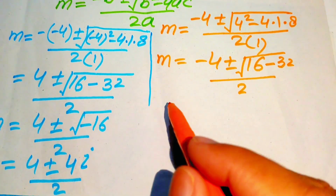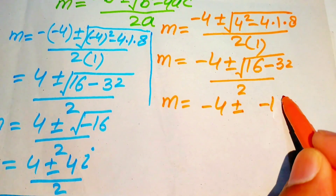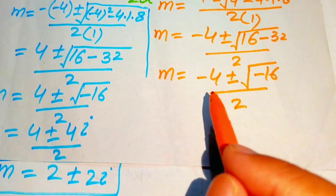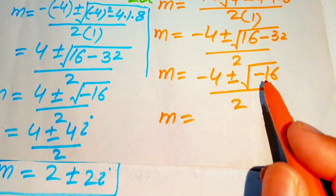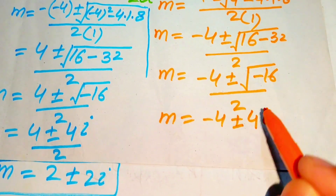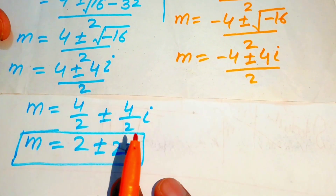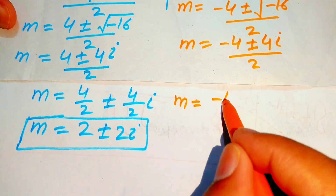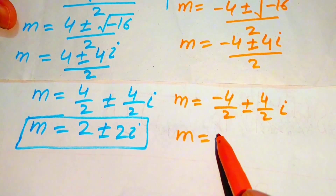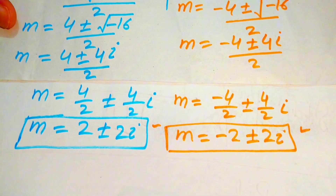We simplify to minus 4 plus or minus square root of minus 16, divided by 2. The square root of 16 is 4 and the square root of minus 1 is i. Separating terms: m equals minus 4 over 2 plus or minus 4 over 2 times i, giving m equals minus 2 plus or minus 2i. These are the four complex roots of the given equation, and this is the final answer.